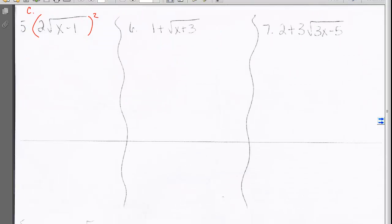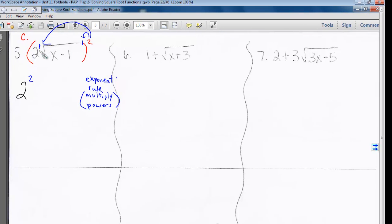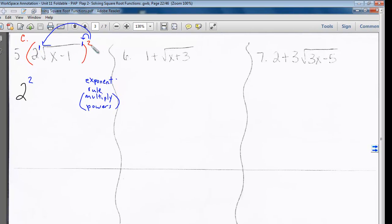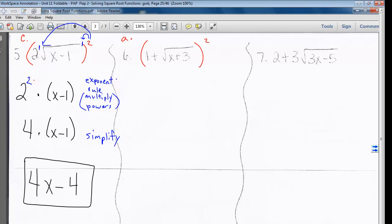Example 5 is an example of type C. 2 times the square root of x minus 1. We need to remember that we have to follow our exponent rules and multiply the powers. So 2 will multiply to the little understood 1 here, and it will multiply to the understood 1 outside the radical. So we get 2 squared times x minus 1. Simplify, and we end up with 4x minus 4.